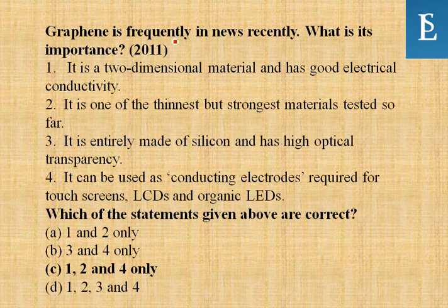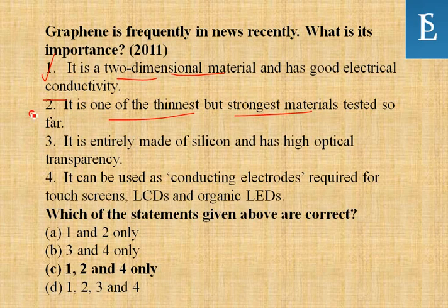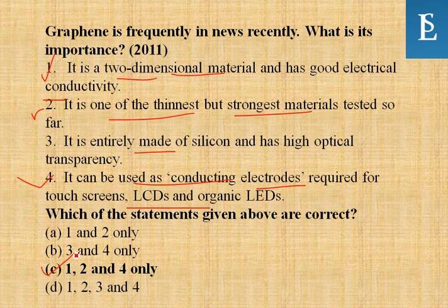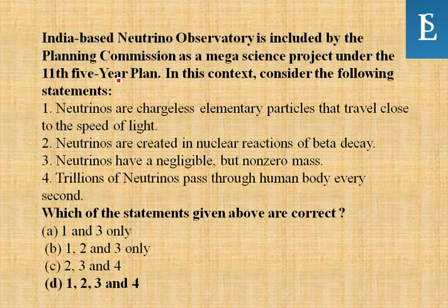Graphene is frequently in the news — this question actually came in 2011 Civil Services exam. It is a two-dimensional material with good electrical conductivity. It is one of the thinnest but strongest materials tested so far. It is not entirely made of silicon. It can be used as conducting electrodes required for touch screens, LCDs, and organic LEDs. So the correct answer is option C: statements one, two, and four.